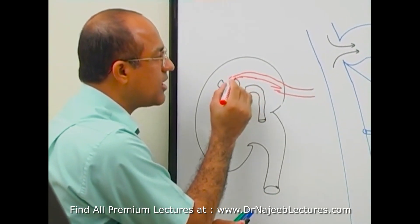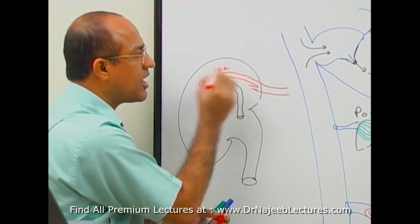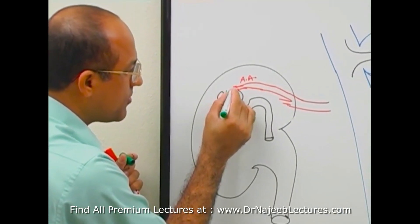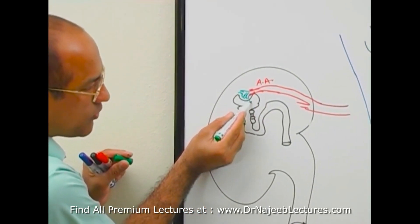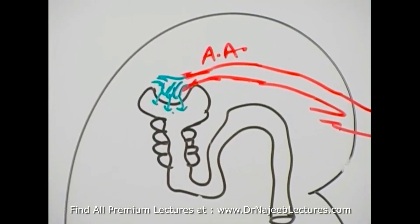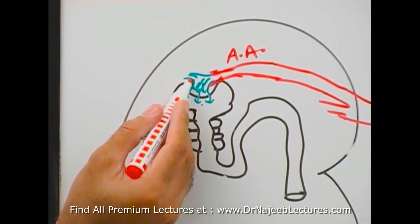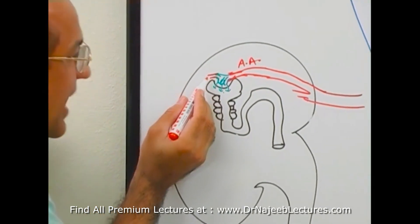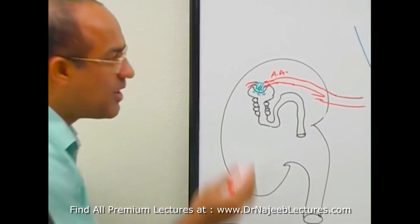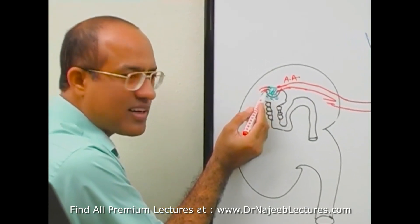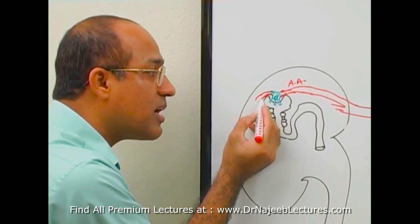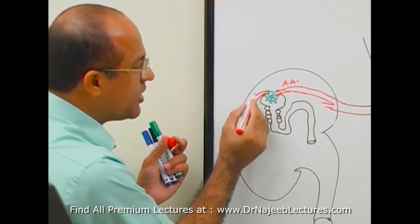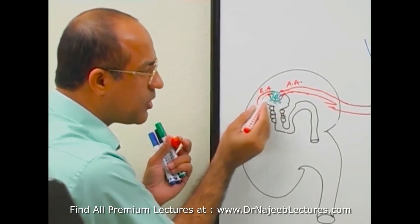This artery coming to the nephron is called the afferent arteriole. The afferent arteriole breaks down into small capillary loops, and through these capillaries fluid is filtered into the tubule. Then all these capillaries recollect — but not into a vein. This is the unusual thing: the capillaries reunite to form another arteriole. Blood comes through an arteriole, breaks into capillaries, and then the capillaries reunite to make another arteriole. This is the efferent arteriole. So there is an afferent arteriole and an efferent arteriole.